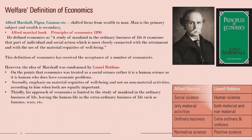In summary, the difference between Marshall and Robbins: Marshall said economics is a social science; Robbins said it's a human science. Marshall included only material activities; Robbins included both material and non-material. Marshall addressed only ordinary business of life; Robbins addressed both ordinary and extraordinary business of life such as war and famine. Marshall said economics is a normative science; Robbins said it is a positive science.